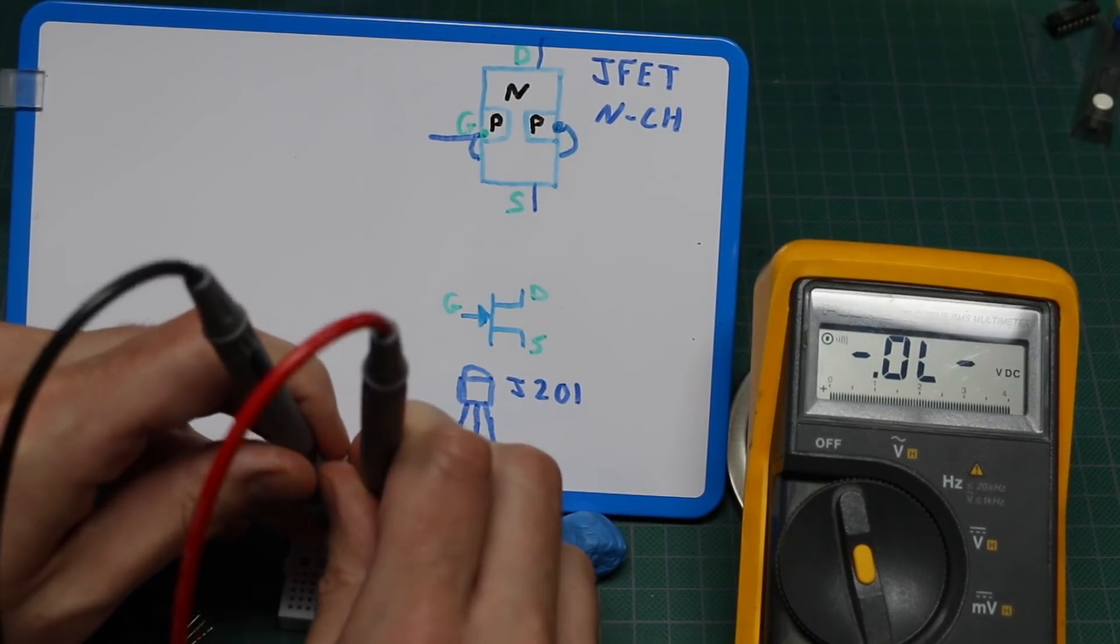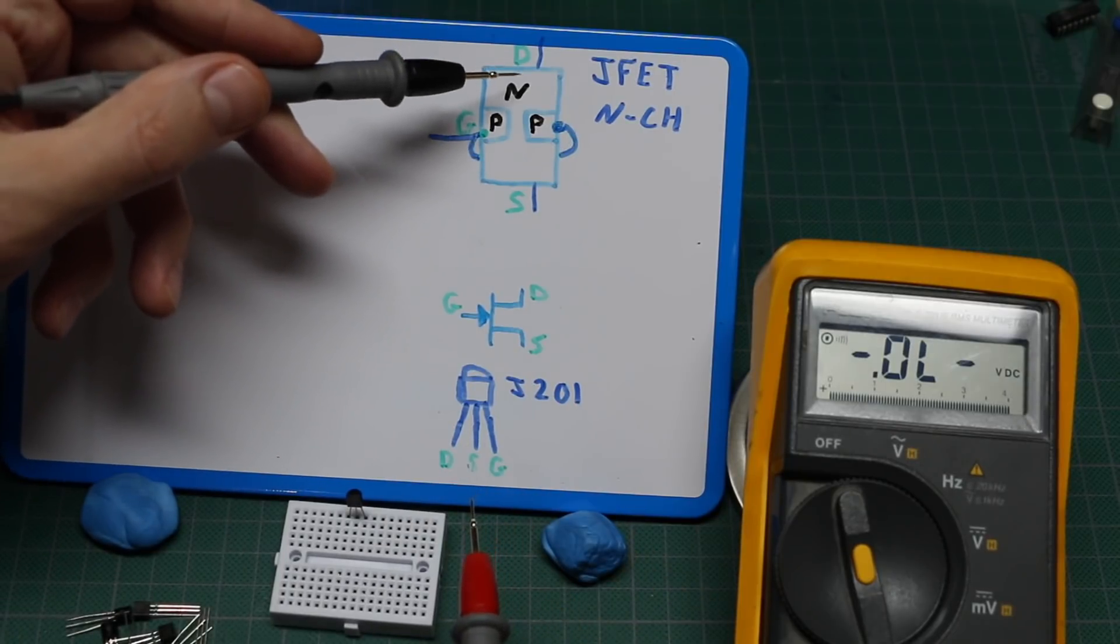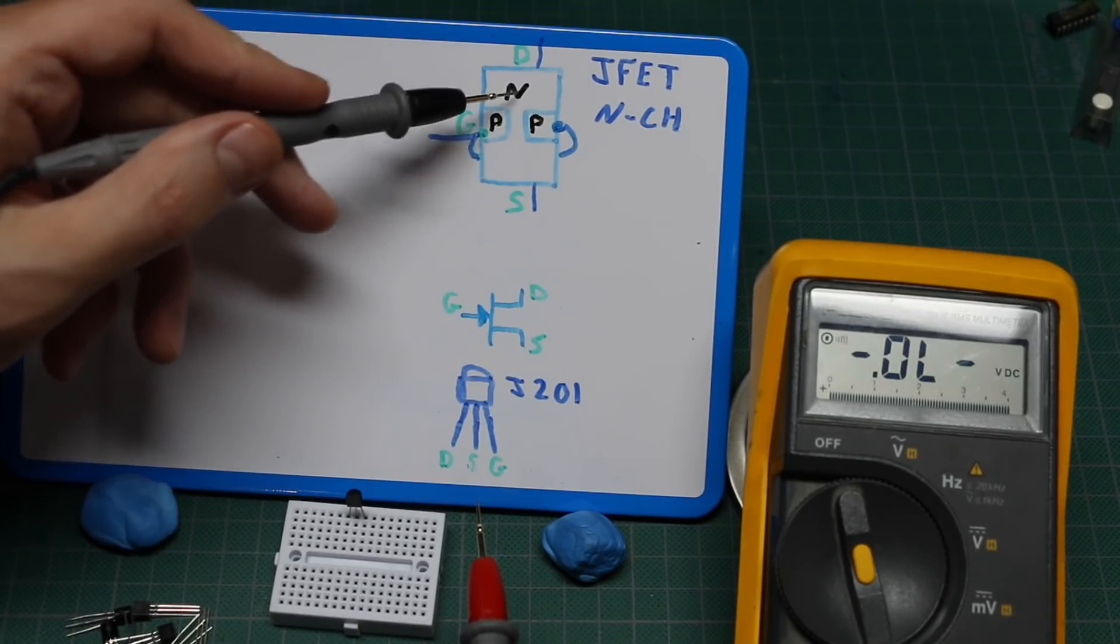but nothing gate to drain. That's weird. This is supposed to be a common channel. I'm getting a diode drop here but not here.